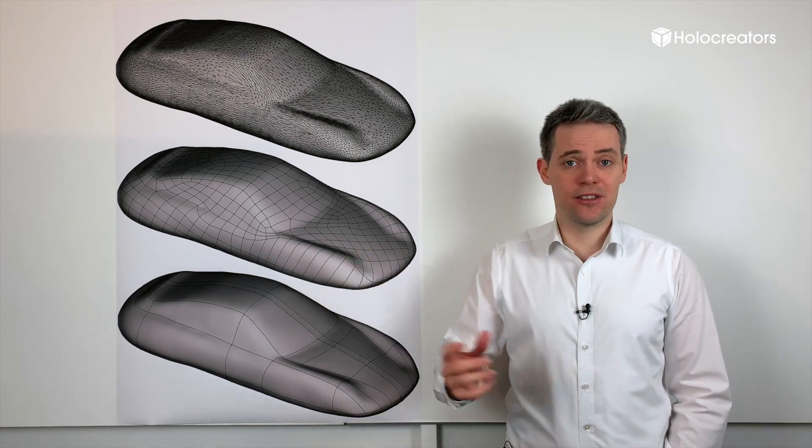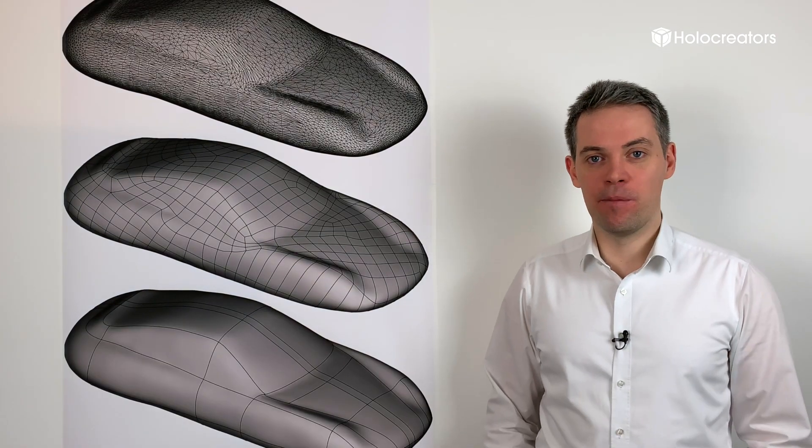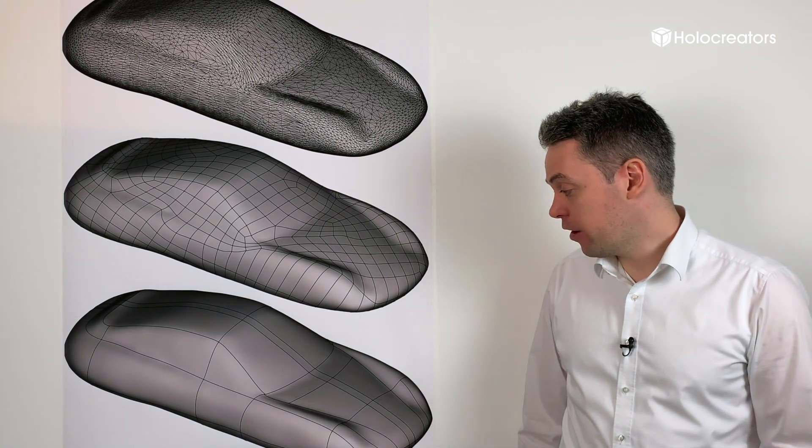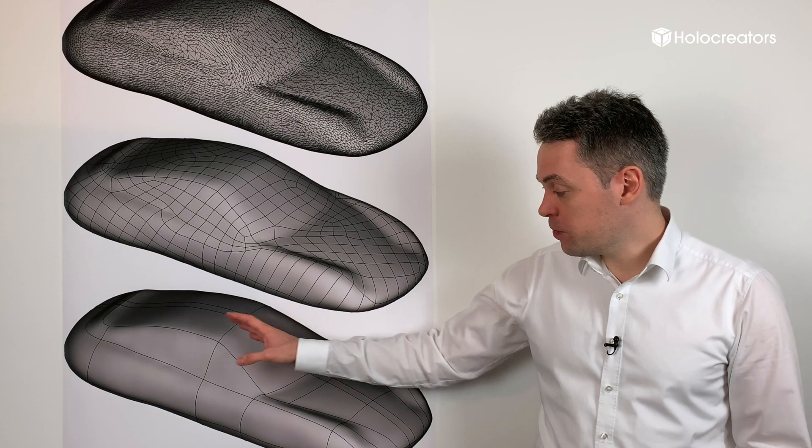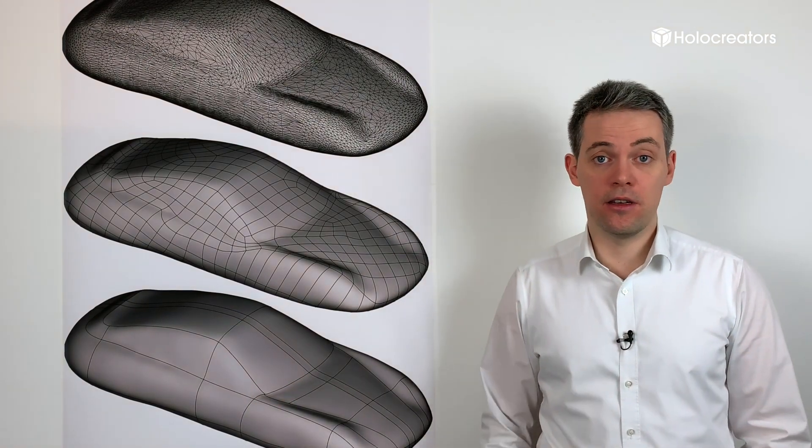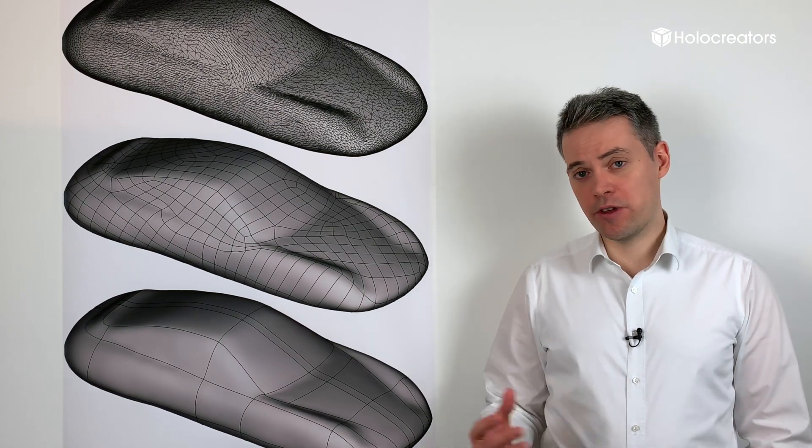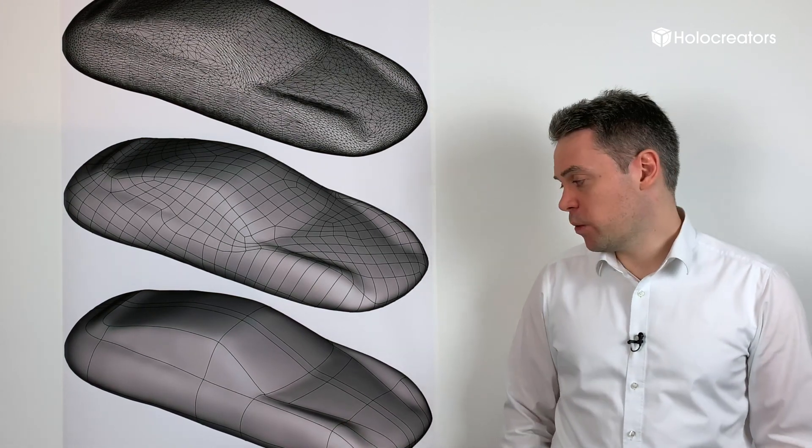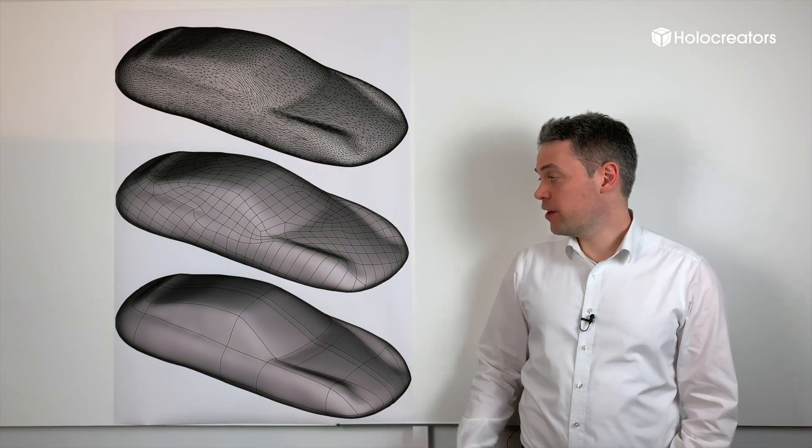The advantages of boundary fit are that the NURBS curves do follow the curvature of the part because they are manually generated. Also the NURBS patches are fewer, so that results in a smaller file size which is easier to work with. Also the closing to a solid model is always possible with boundary fit.